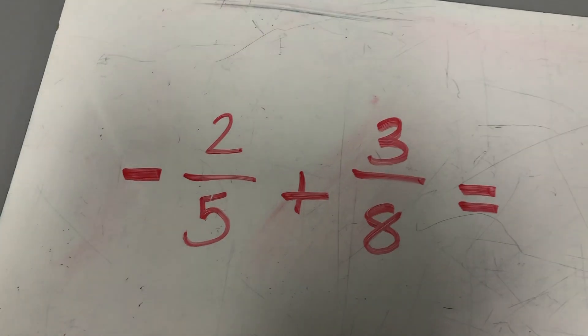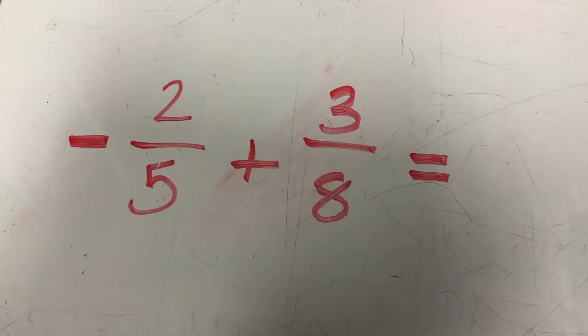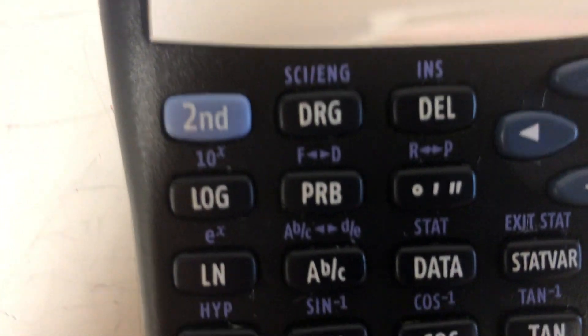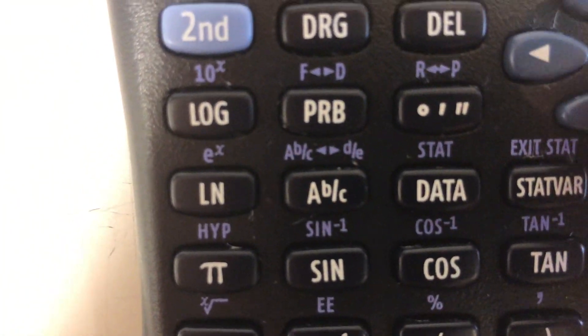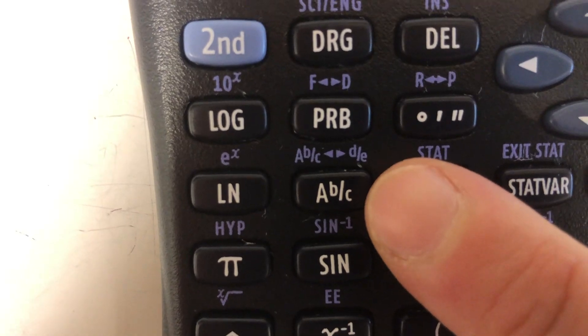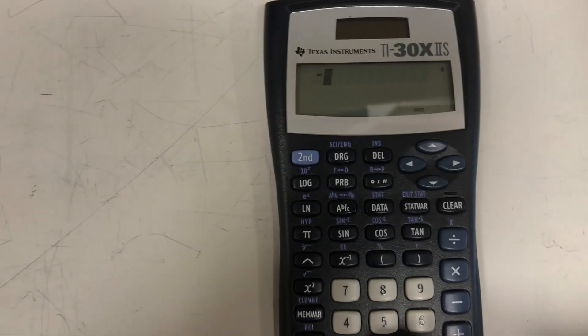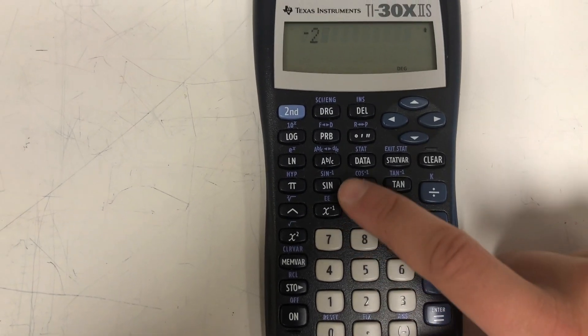The next thing we need is to enter our fraction of two-fifths. The easiest way to do this on this calculator is to use the fraction button right here, which is that ABC button that you see. It kind of looks a little bit like a fraction. We need to enter two-fifths. So I'm going to type in two and I'm going to hit the fraction button.